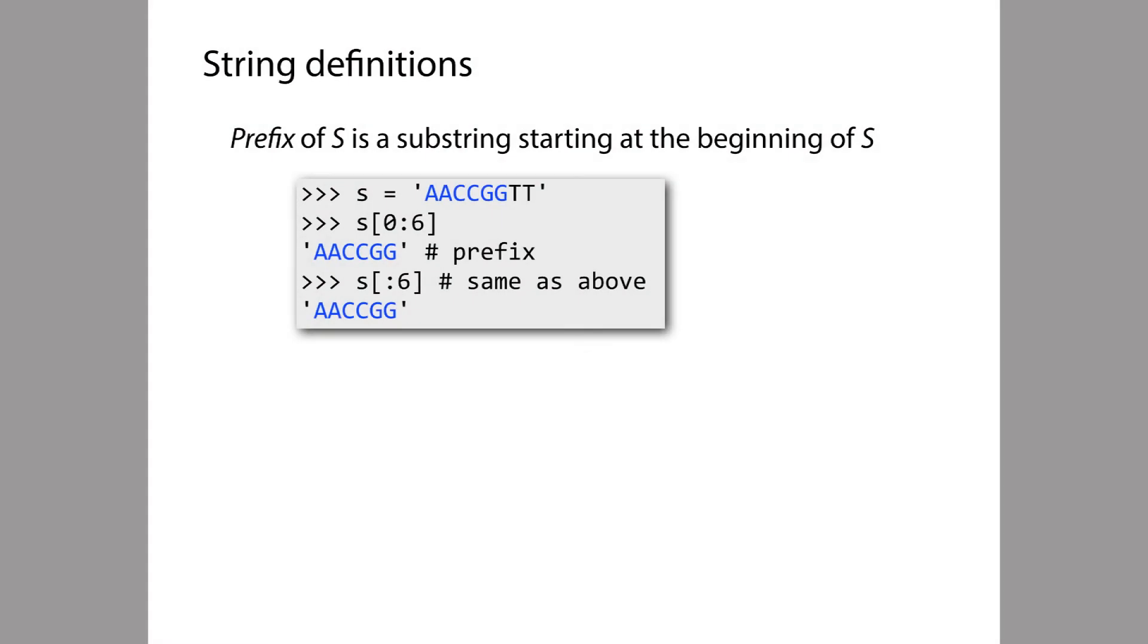A prefix of a string is the substring that begins at the beginning of it. For example, if we take this string S and use bracket notation to take the substring that goes from offset 0 up to, but not including, offset 6, we get this string. Since it begins at offset 0, we call it a prefix. It's aligned with the left-hand side of the string that it came from.